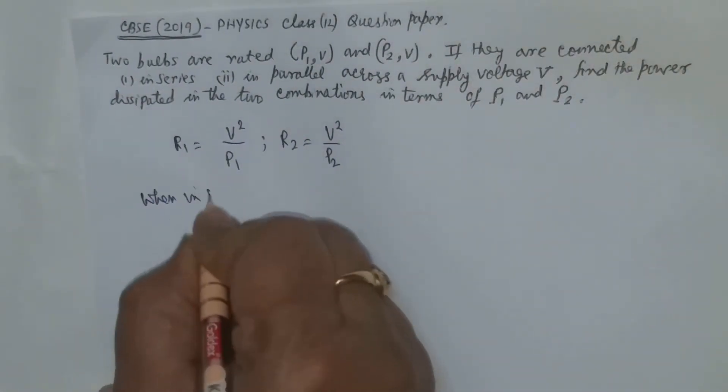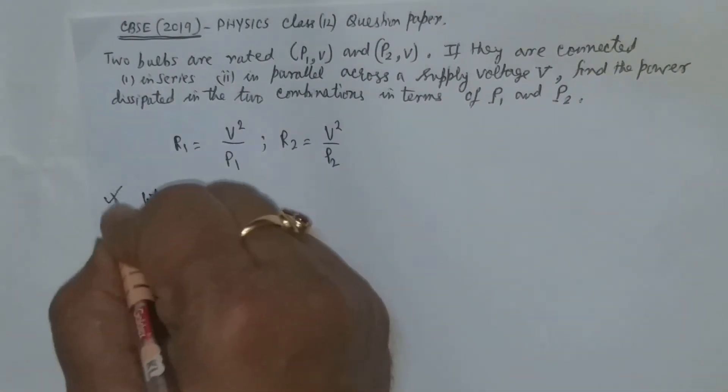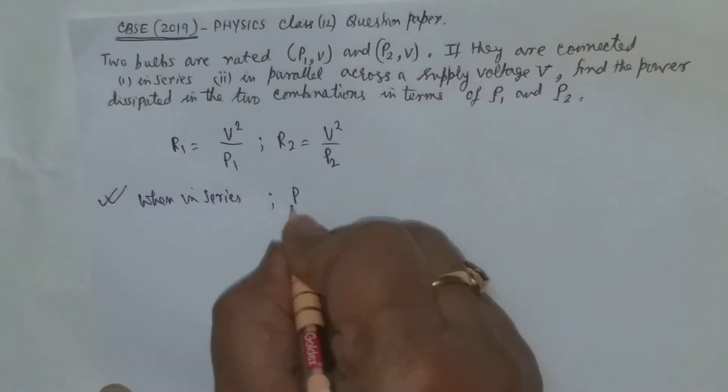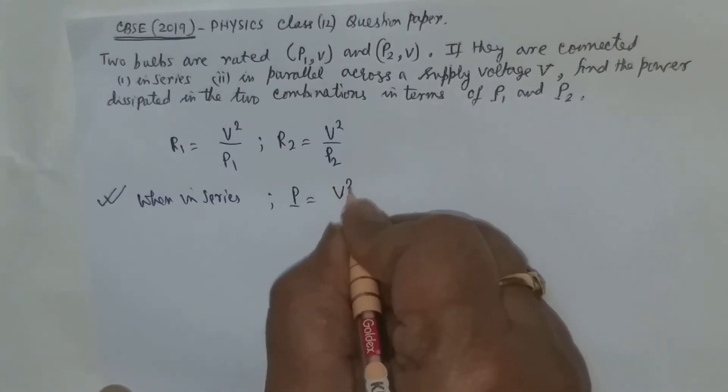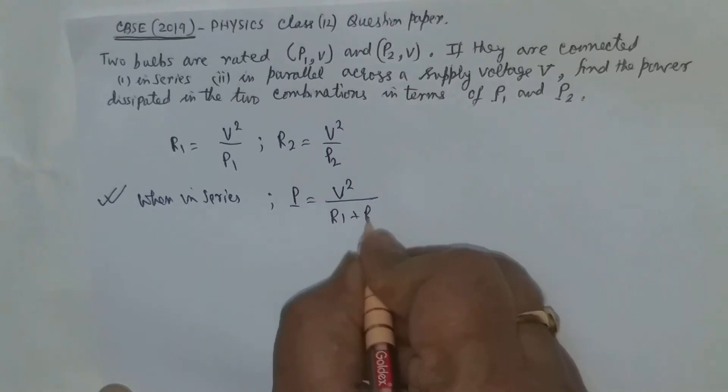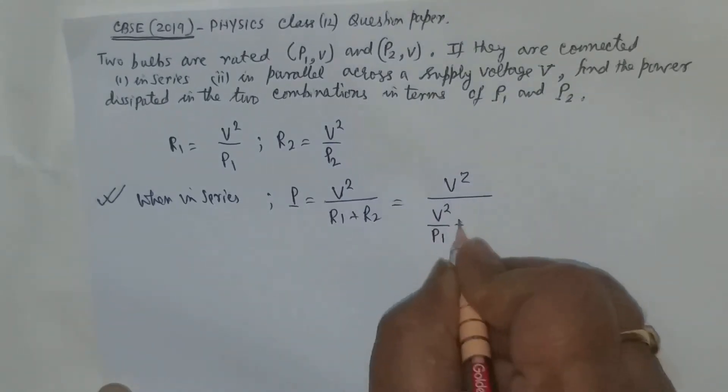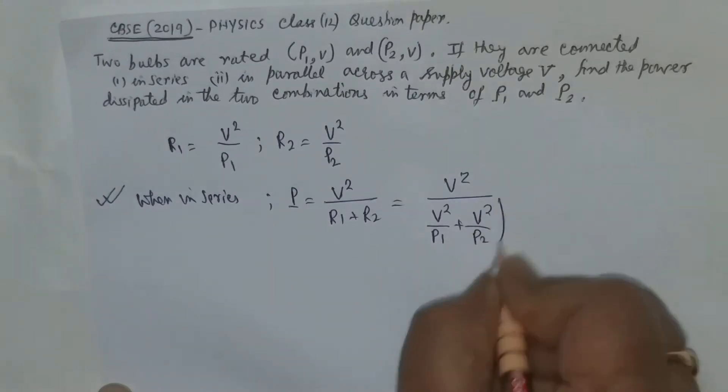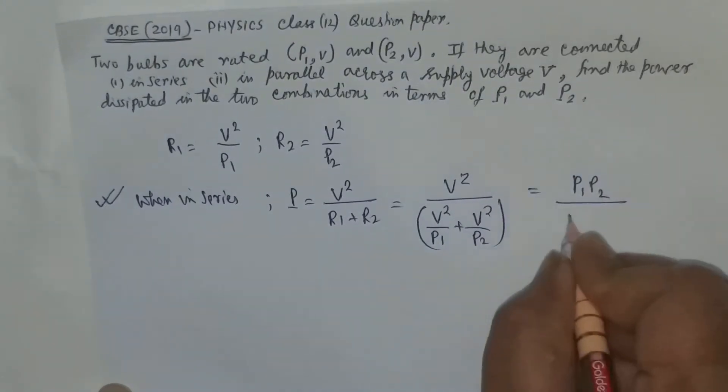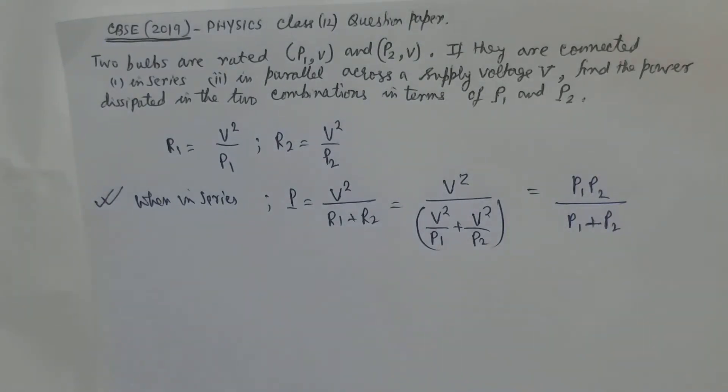So when in series, let us find out: when in series, the power will be equal to V² by effective resistance R1 plus R2. So V² by (V² by P1 plus V² by P2), and if you arrange these terms, you have P1P2 divided by (P1 plus P2).